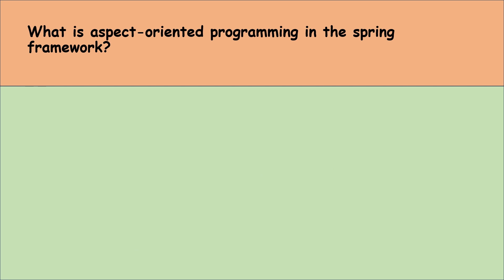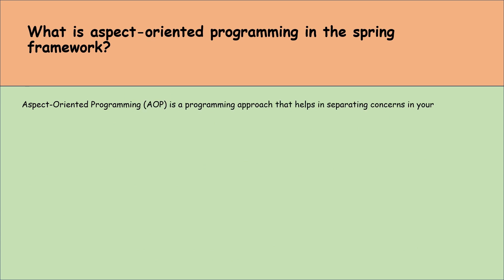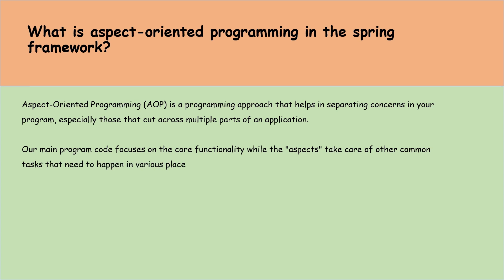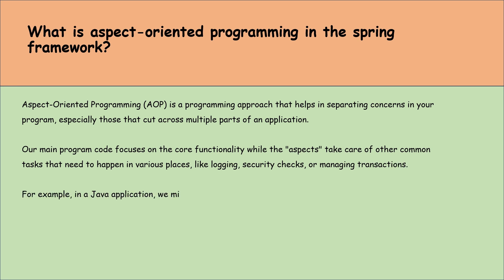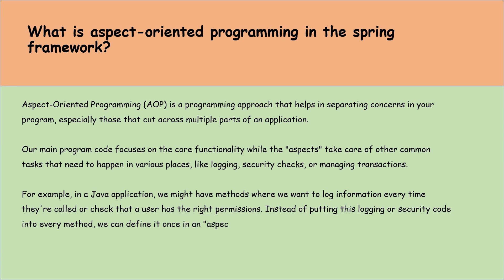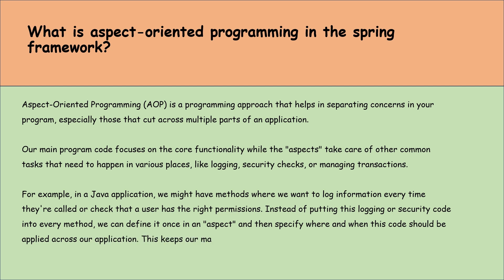What is aspect-oriented programming in the Spring framework? AOP is a programming approach that helps in separating concerns in our program, especially those that cut across multiple parts of an application. The main program code focuses on core functionality while aspects take care of other common tasks that need to happen in various places, like logging, security checks, or managing transactions. For example, in a Java application, instead of putting logging or security code into every method, we can define it once in an aspect and specify where and when this code should be applied across our application, keeping our main code cleaner and more focused on its primary tasks.